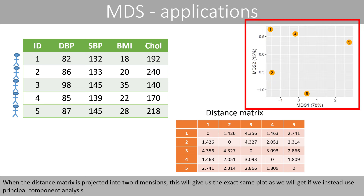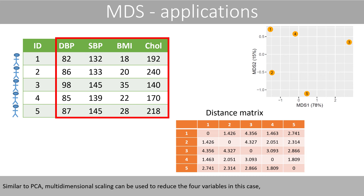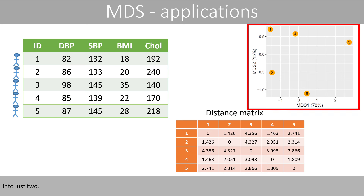When the distance matrix is projected into two dimensions, this will give us the exact same plot as we get if we use principal component analysis. Similar to PCA, multidimensional scaling can be used to reduce the four variables in this case into just two.